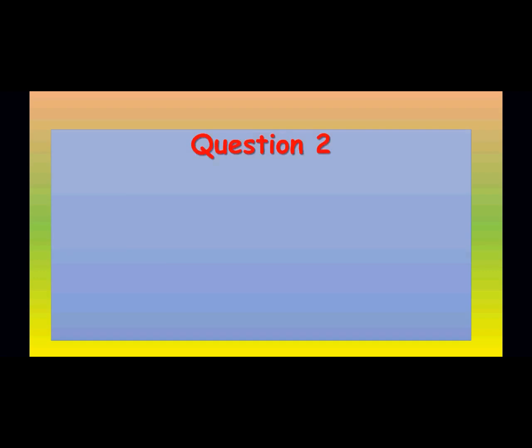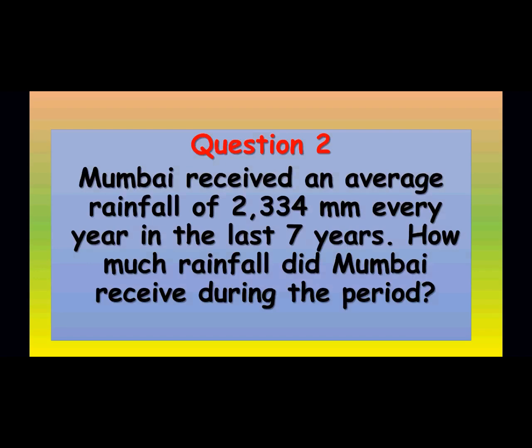Last class we learned till question number two. Mumbai received an average rainfall of 2334 millimeters every year. In the last seven years, how much rainfall did Mumbai receive? So one year rainfall is 2334 mm. For seven years, we are going to do multiplication to find the answer.